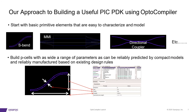We build P-cells for each of those things, expanding to as wide a range of parameters as can be reliably predicted by compact models and reliably manufactured. We can't have P-cells that go off in some crazy direction that doesn't make sense from a physics or manufacturing point of view. Here's a detailed image of a P-cell element from the OptoCompiler PDK.